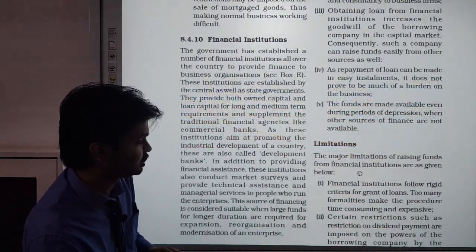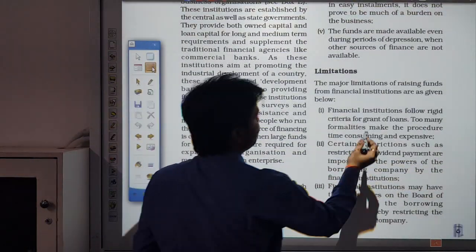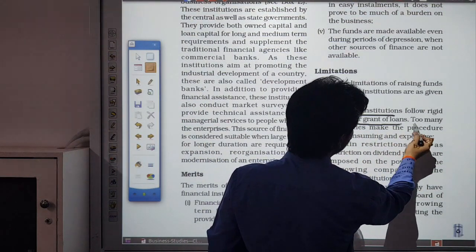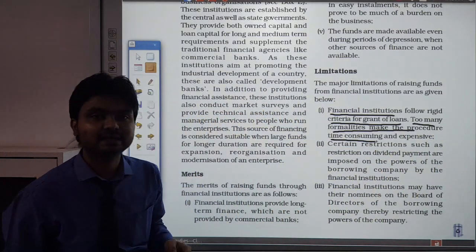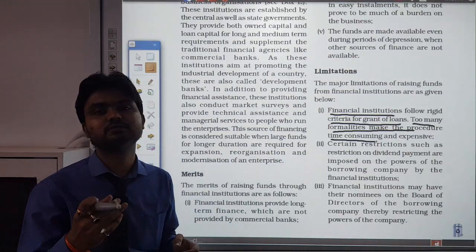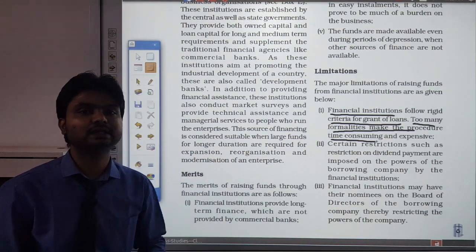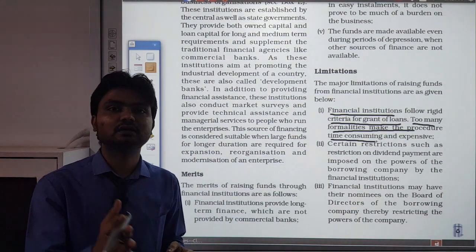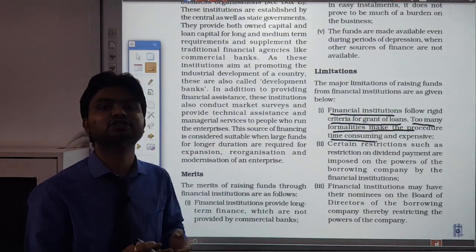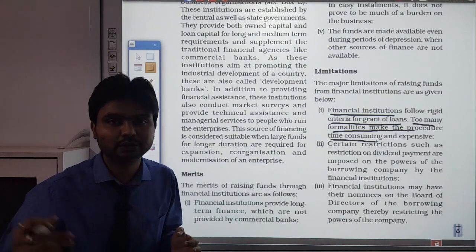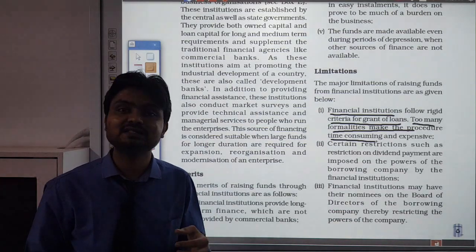Now let's look at the limitations of financial institutions. Financial institutions follow rigid criteria for granting loans, and too many formalities make the procedure time-consuming. If you take a loan from a financial institution, there is a lot of paperwork and many formalities to complete — these are done as a form of security documentation to ensure the loan will be returned. This lengthy documentation process means that if you have an immediate requirement for funds, you cannot go to financial institutions.